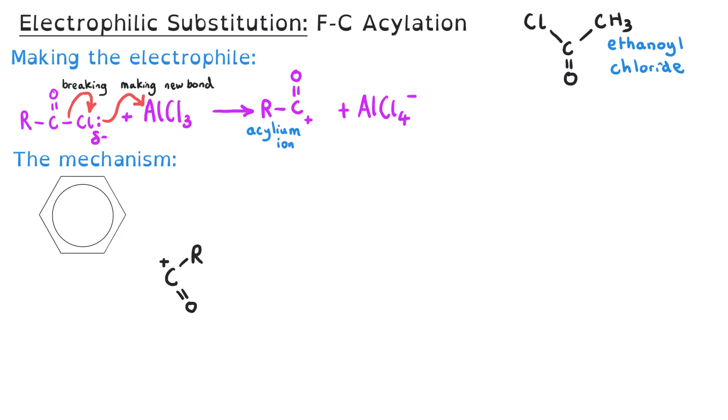The mechanism for Friedel-Crafts acylation is really similar to nitration. In step one, our benzene ring is attracted to the electrophile, the acylium ion. The acylium ion attacks the benzene ring and a new bond forms, which we're showing with this curly arrow here. This leads to the formation of a positively charged intermediate, exactly the same as in nitration. This is unstable because the delocalized pi cloud only has four electrons in it instead of the six, which it needs to be considered stable.